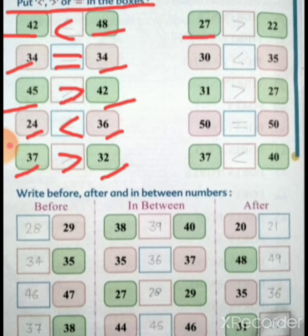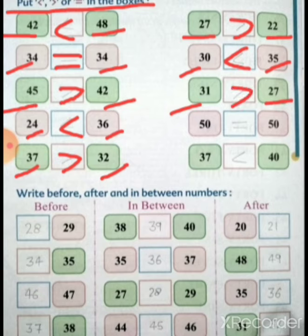Let's see. 27, 22. 27, 22 is greater than. So what will you say? Greater than. 30, 35. 30 is less than 35. So we will say less than. Okay? 31, 27. 31, 27 is greater than. So what will you say? Greater than. Right? 50, 50. So what will you say? Equal. Right?